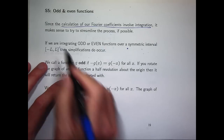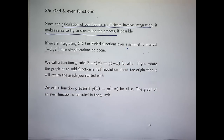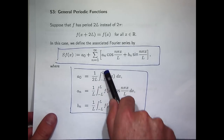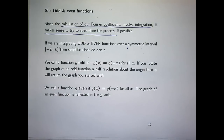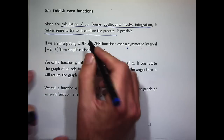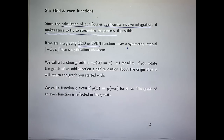We use integration to calculate our Fourier coefficients, so it makes sense to streamline the process. Our Fourier coefficient formulae involve integration from minus L to positive L, where L is some number — this is known as a symmetric interval. Now, if we are integrating so-called odd or even functions, then integrals over symmetric intervals simplify.